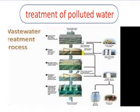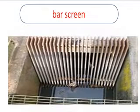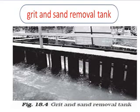Now we will see how polluted water is treated. This is done in a Wastewater Treatment Plant, called WWTP. Wastewater is first passed through bars of screens, where large substances like rags, sticks, cans, plastic packets, and napkins are removed. Then the wastewater goes to a grit and sand removal tank.